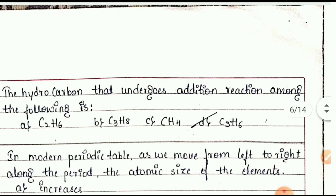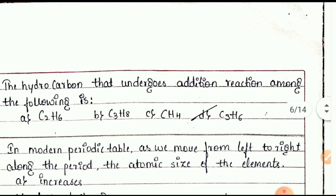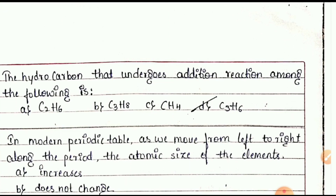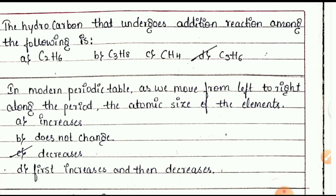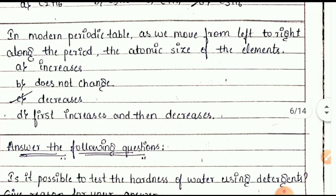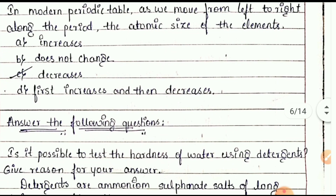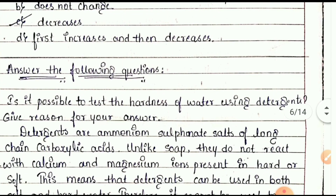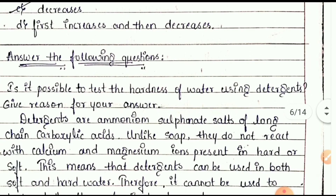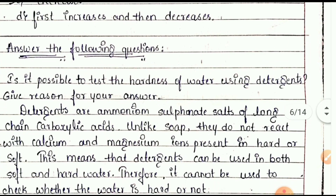The next MCQ: the hydrocarbon that undergoes addition reactions among the following is C₃H₆. In the modern periodic table, as we move from left to right along a period, the atomic size of elements decreases.